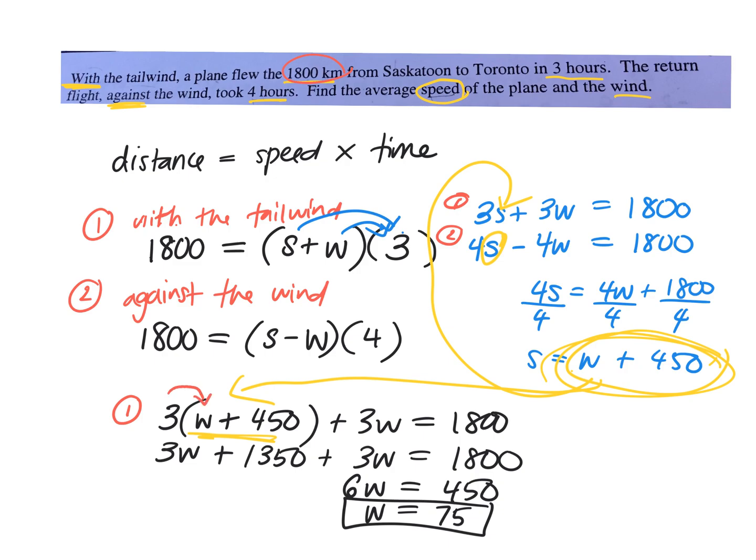And then don't forget, you have to distribute. You have to multiply 3 times w, 3 times 450. Wait, which step did I do wrong? Did you add 3w plus 3w to get 6w? I think I messed it. Once you know one variable, then we can take that and we can plug it in to the original equation or the equation that you isolated.